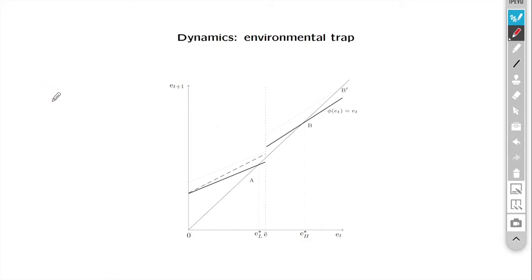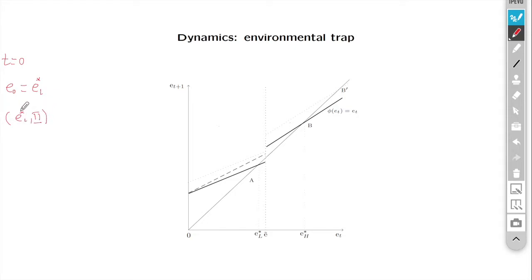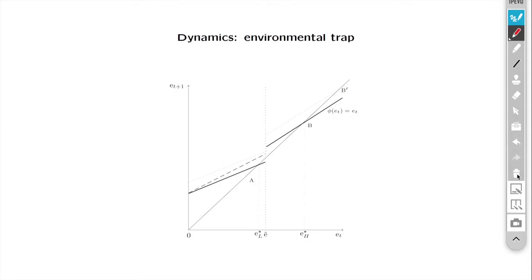A natural question could be: imagine you have an economy that is in the environmental trap, or is moving towards it — how can we make the economy escape the trap? Our model is able to give us some answers. Imagine that at period zero, the beginning of the economy, it starts in the trap — low life expectancy and low environmental quality. The question is how can we pass from the low steady state to the high steady state, characterized by high environmental quality and high life expectancy. Our model points out several possibilities.